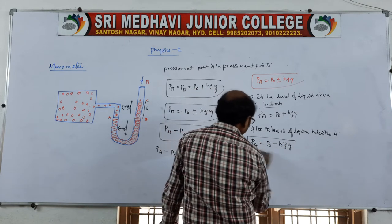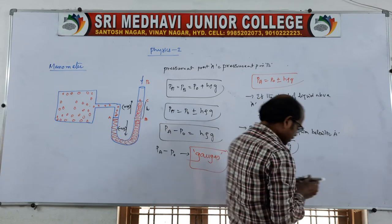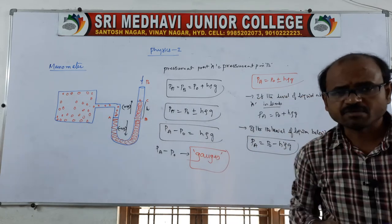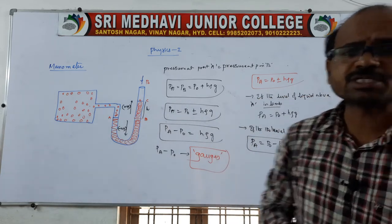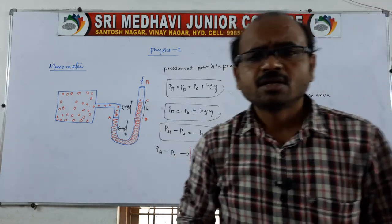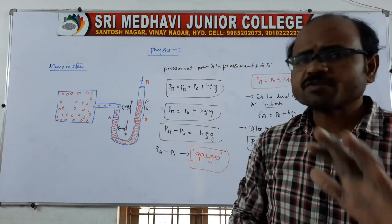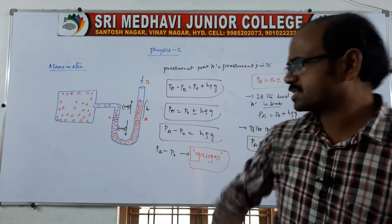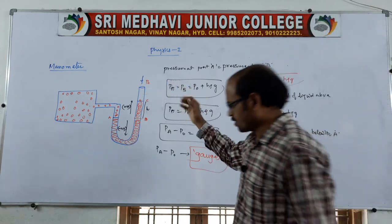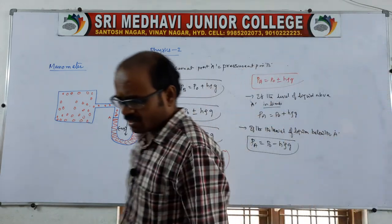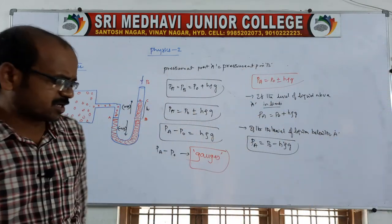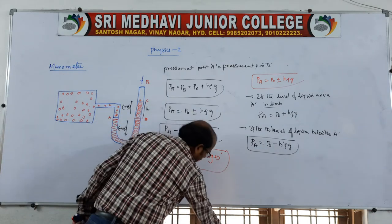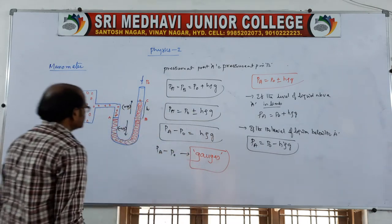So the manometer is a device used to measure the pressure of any given gas, and it can also calculate the gauge pressure — that is, the difference in pressure (excess pressure).